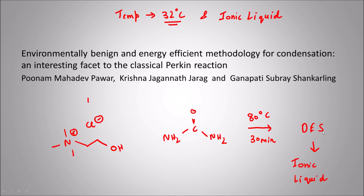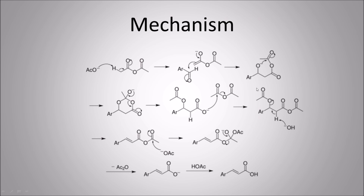What you get is DES — Deep Eutectic Solvent — which is a specific kind of ionic liquid. It's very easy to synthesize: you just need urea and choline chloride, heat it for 30 minutes at 80 degrees Celsius, and you get your ionic liquid. You can then use this ionic liquid as a solvent to carry out this particular reaction. For more information you can read the article. Now let's go to the mechanism.